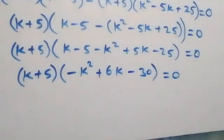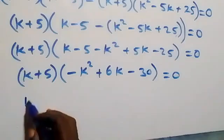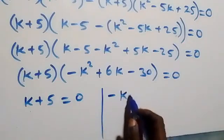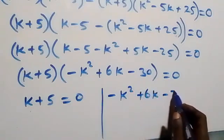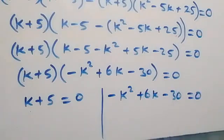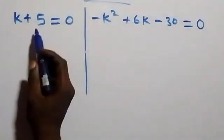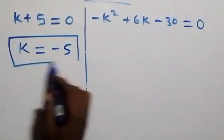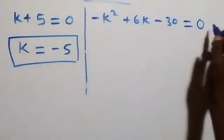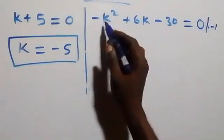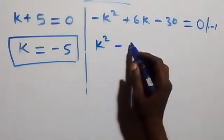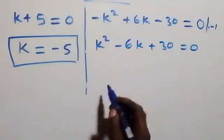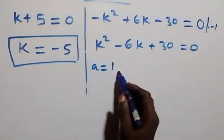From what we have here we consider two possible cases. Either k plus 5 equals zero, which gives k equals minus 5, or minus k squared plus 6k minus 30 equals zero. Multiplying through by minus one to remove the leading minus, this becomes k squared minus 6k plus 30 equals zero.